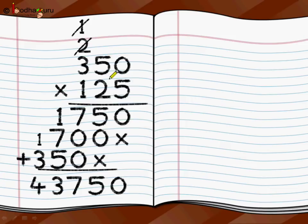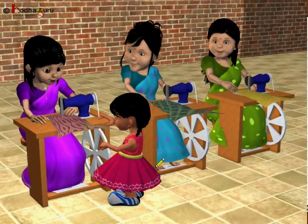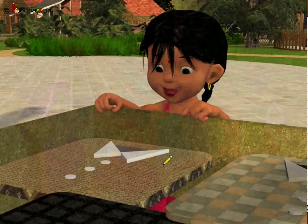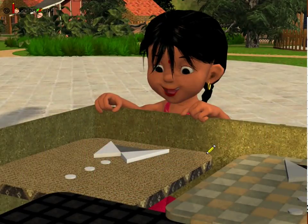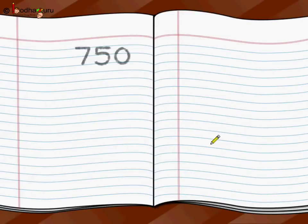350 rupees per family and 125 families contributed, so they have 43,750 rupees collected for their embroidery business. The ladies looked on the internet to find nice designs, added embroideries, and worked together on each other's strengths to make beautiful clothes. They planned to sell these at a nearby big carnival in the city at 750 rupees per garment, and they made 250 such beautiful embroidery garments. So how much money will they collect if they sell all of them?